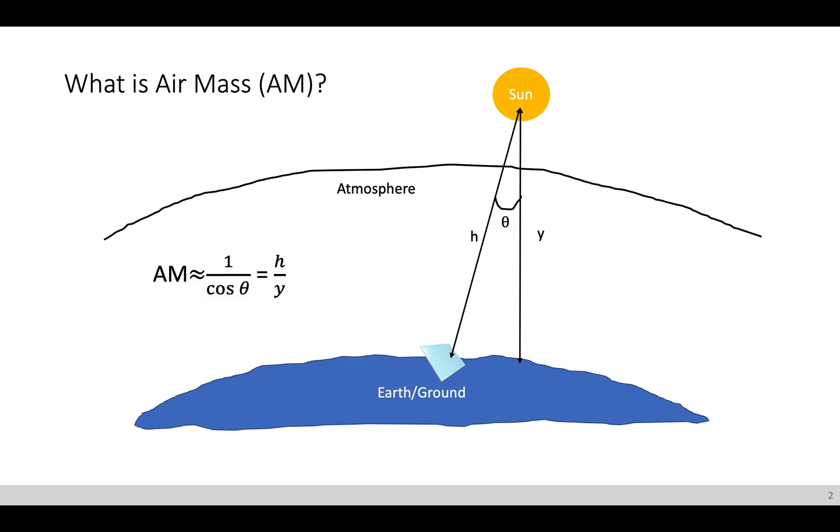AM, air mass, is defined as 1 over cosine theta, so this would then equal H over Y. And so air mass can also be defined as the proportion of the atmosphere that light needs to travel in order to reach the Earth's ground, relative to the overhead path length from the Sun to the Earth.